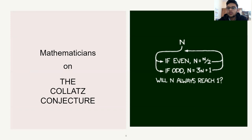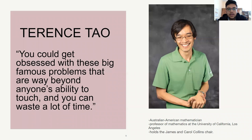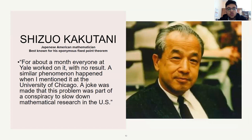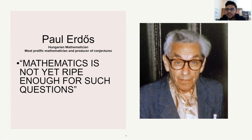The video touched on other areas of mathematics the problem is linked to. Now let's look at what mathematicians who have worked on the Collatz conjecture for a long time have to say. Terence Tao says: 'You could get obsessed with these big famous problems that are way beyond anyone's ability to touch, and you can waste a lot of time. For about a month, everyone at Yale worked on it with no result.' Paul Erdős said: 'Mathematics is not yet ready for such questions.'